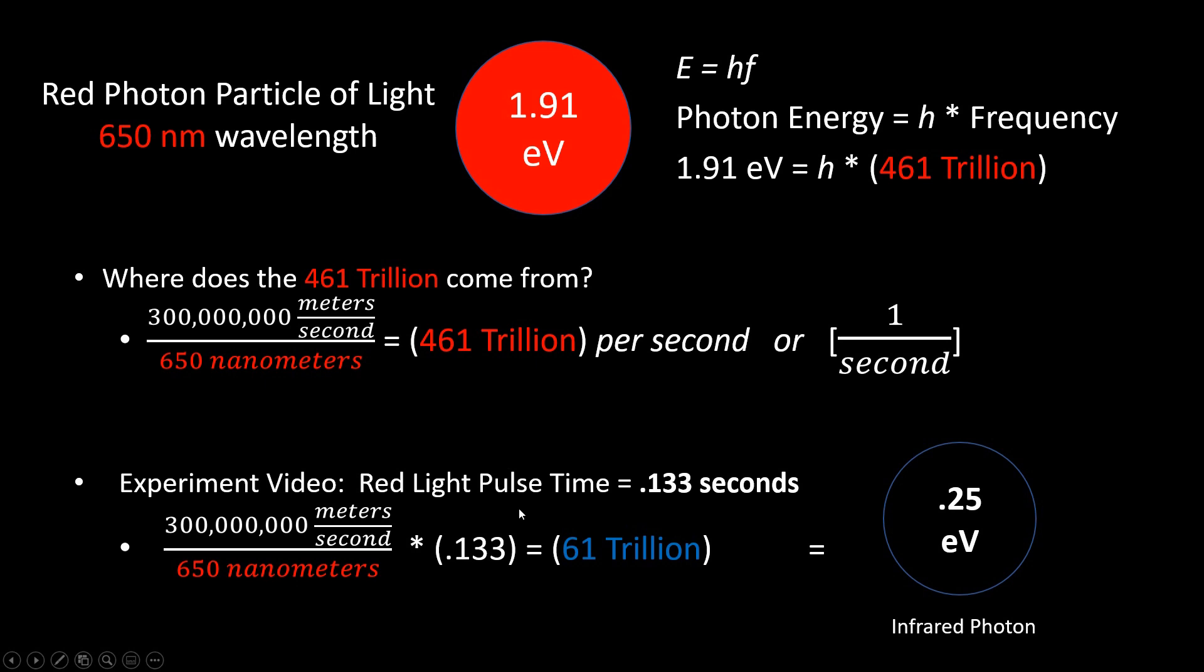In the previous video, I showed a light pulse of about 1/8th of a second long. It was the color red, but the math showed that it would not produce the correct amount of energy for red photons.